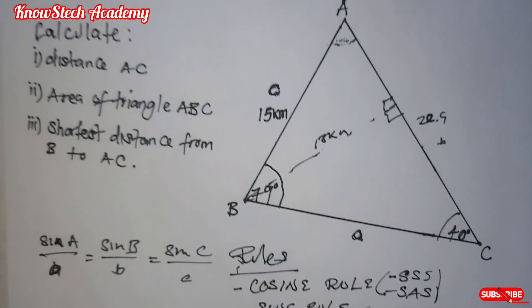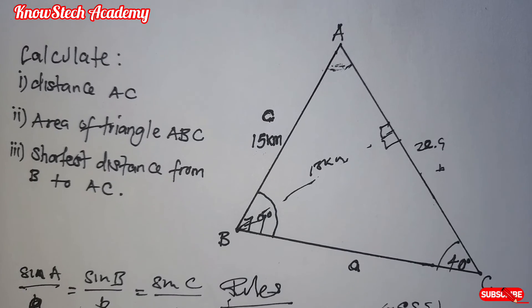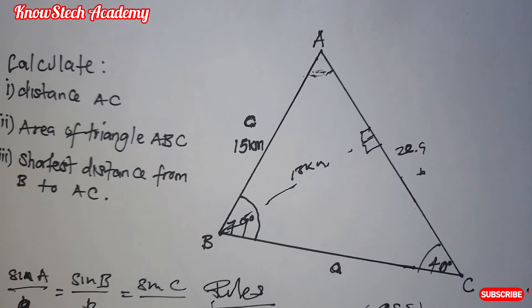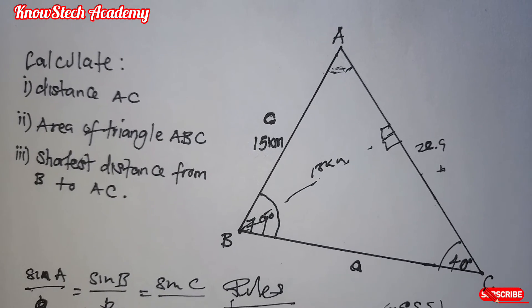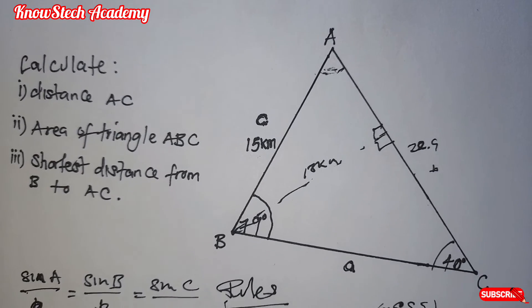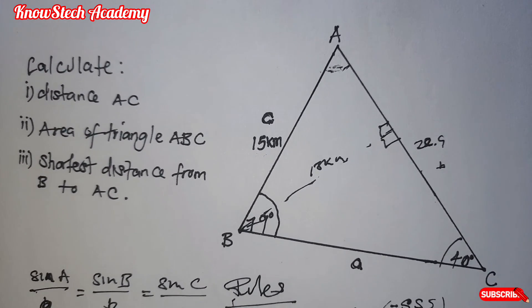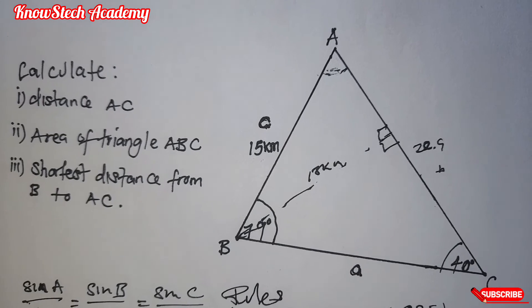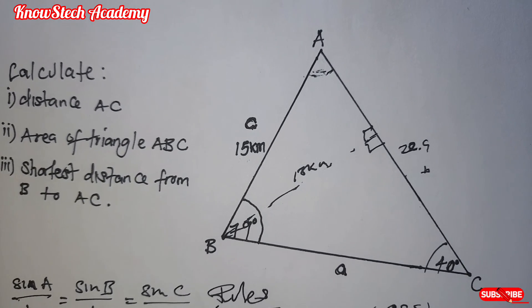So that's how you calculate distance, area, and shortest distance when you're solving non-right-angled triangles where you're supposed to use the sine rule. Thank you very much. Remember to subscribe and like the video. Thank you.